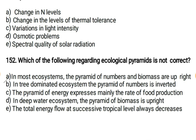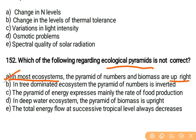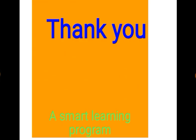Our last question: which of the following regarding ecological pyramids is not correct? In ecological pyramids, we have both inverted pyramids and upright pyramids. So we cannot say that in most ecosystems the pyramids of numbers and biomass are upright — that statement is not correct regarding ecological pyramids.